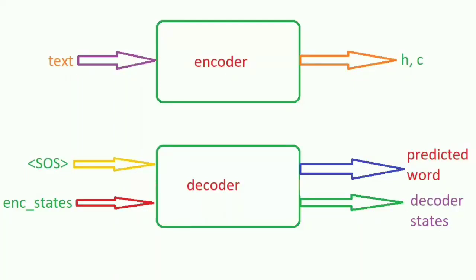Welcome back to part 5 of creating a chatbot from scratch using Keras sequence-to-sequence model. In the previous part we already built the model. Now we are going to build an inference model to talk to our chatbot. We are going to build a different encoder and decoder model from our previous encoder-decoder model to create our inference setup, such that we pass in text and it gives us the predicted next word.